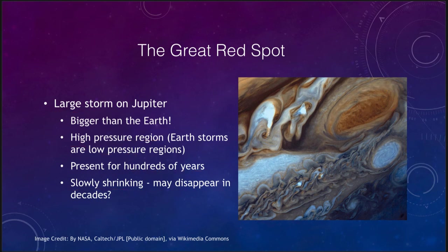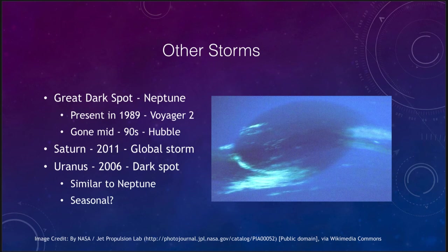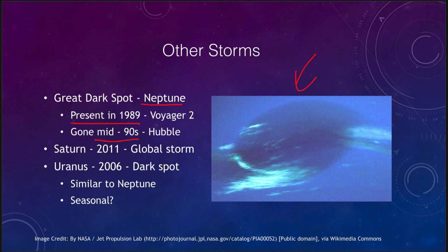The Great Red Spot is not the only storm in the outer solar system. On Neptune, there was the Great Dark Spot, which was present in 1989 when Voyager 2 flew by Neptune. But just a few years later in the mid-1990s, the Hubble Space Telescope took images of Neptune and saw nothing — the Great Dark Spot had disappeared sometime between 1989 and the mid-1990s. We don't know how long it had been there prior to 1989, and we don't have a long enough baseline of study to say how often these storms appear or how long they on average last — whether 10 years, 100 years, or 1000 years.